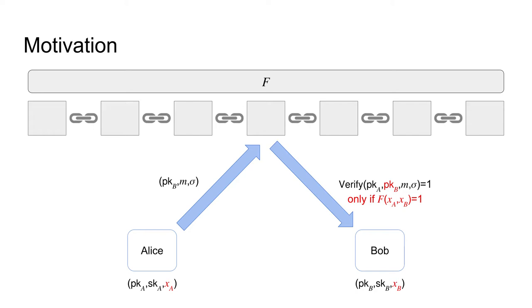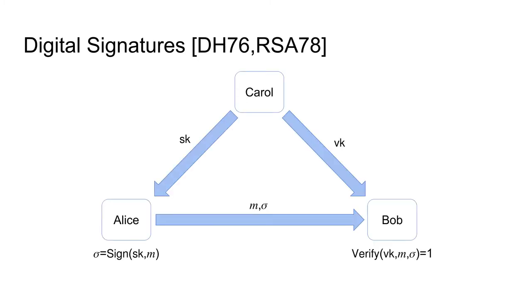Next, we are going to see which existing cryptographic primitives we could use to achieve this goal. The first primitive that could be useful in this setting are digital signatures. In a digital signature scheme, there exists a party Carol that executes the setup procedure that outputs a verification key VK and a secret key SK. Carol then sends the verification key to Bob and the secret key to Alice. Alice can use the secret key to sign a message M and generate the corresponding signature Sigma. The verification key can then be used to check if the signature Sigma is valid with respect to the message M. Unfortunately, this primitive does not incorporate any attributes of the sender or the receiver and is therefore not useful in our setting.